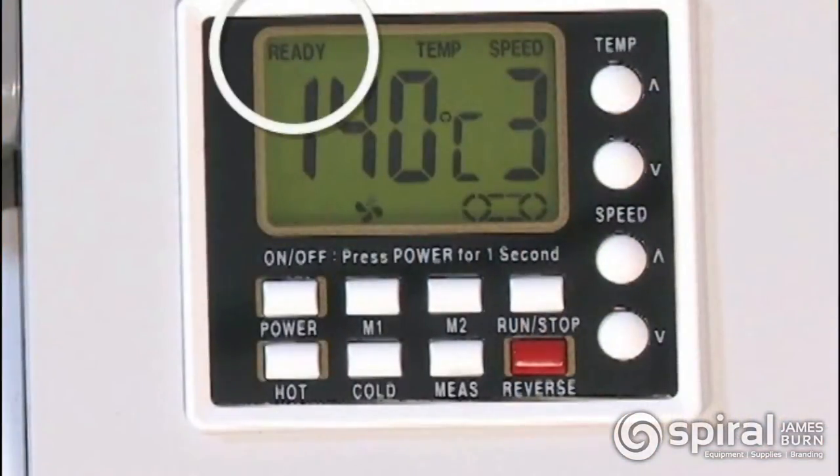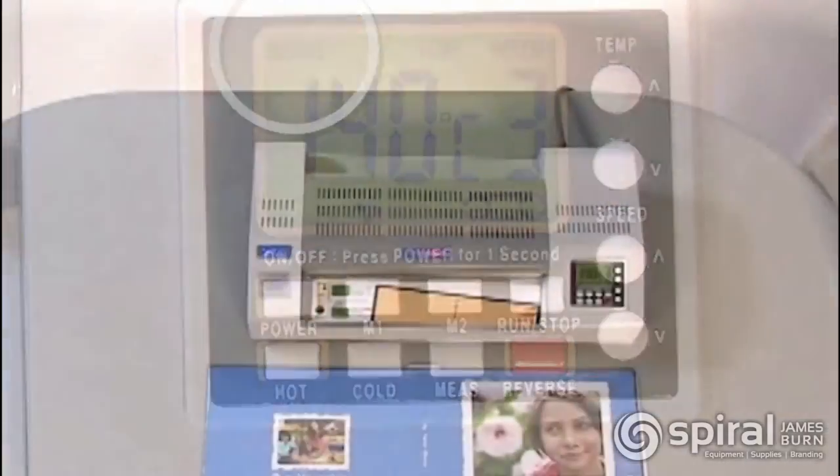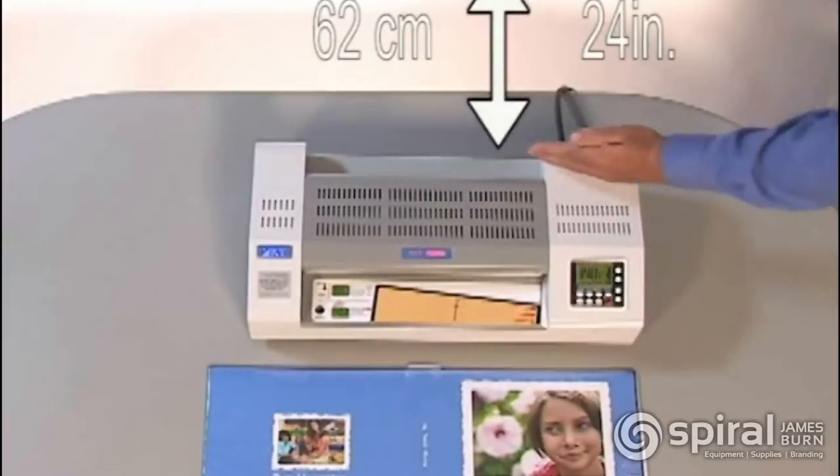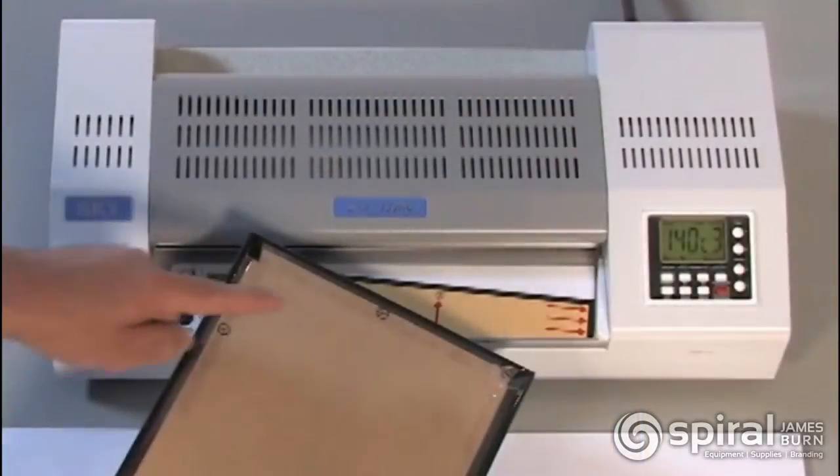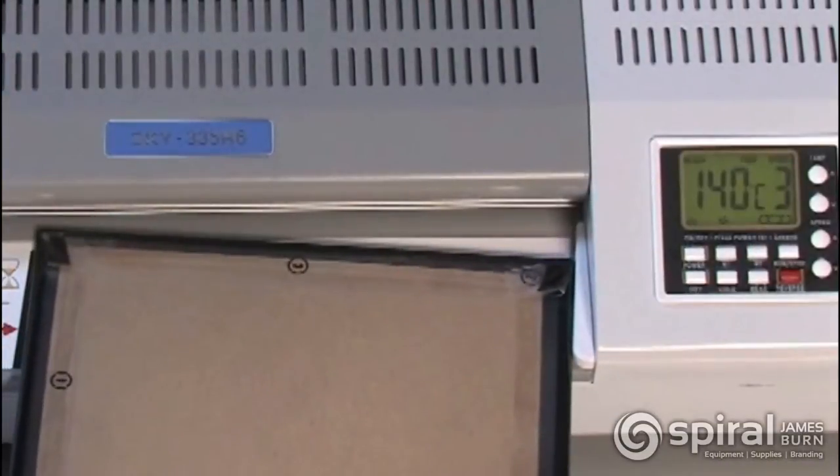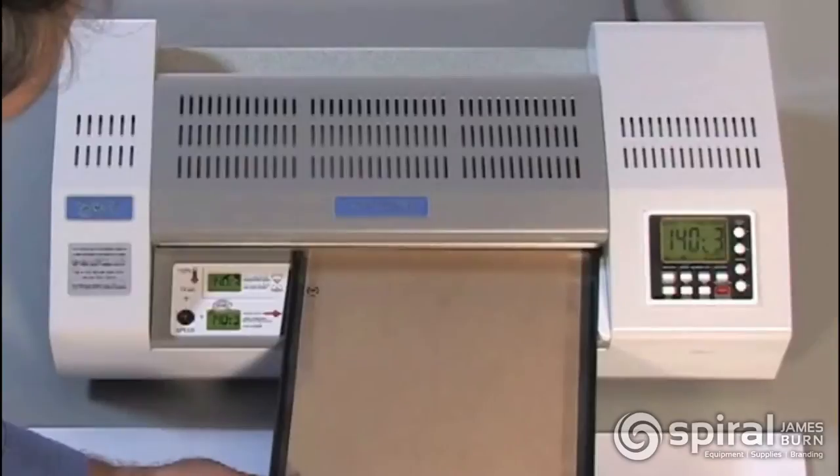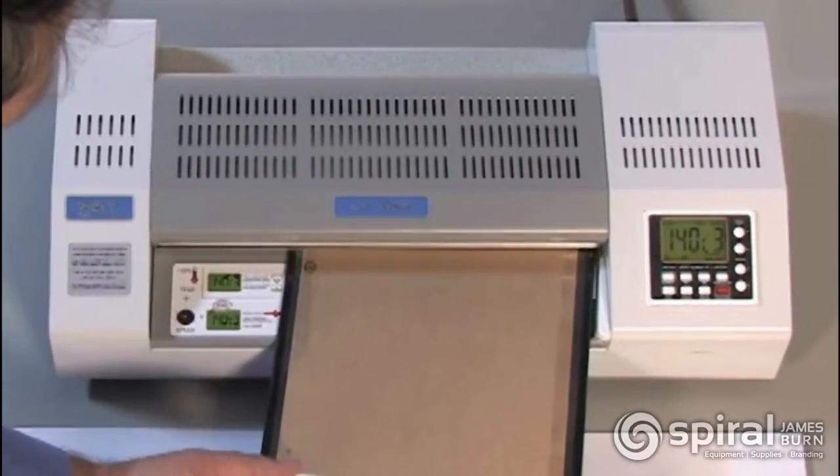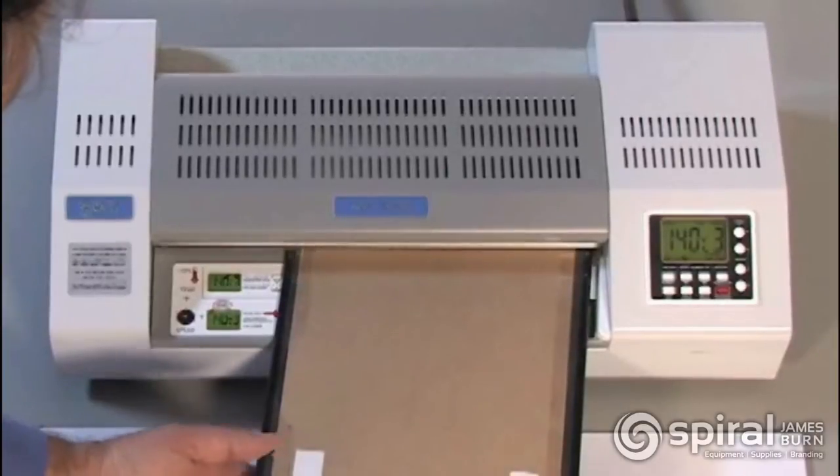Make sure the laminator is ready. The word ready must show in the top left corner of the display. This indicates the laminator has reached the set temperature. Also make sure the display shows temperature 140 degrees Celsius and speed 3. Make sure there is at least 24 inches of clear space behind the laminator. Feed the cover into the laminator at an angle with the right edge against the angled guide, the brown side facing up and the edge labeled 3 facing forward.